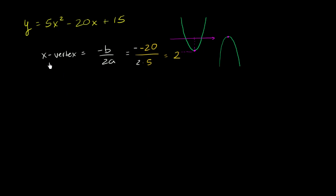And so to find the y value of the vertex, we just substitute back into the equation. The y value is going to be 5 times 2 squared, minus 20 times 2, plus 15, which is equal to, let's see, this is 5 times 4, which is 20, minus 40, which is negative 20, plus 15 is negative 5.